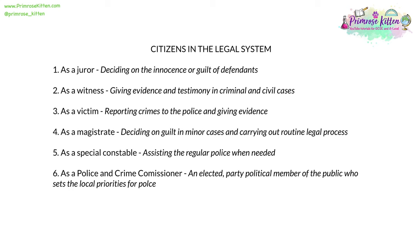There are many ways in which citizens can become involved in the legal system. As a juror, where they may decide on the innocence or guilt of defendants. As a witness, where they may give evidence or testimony in civil or criminal cases. As a victim, where they can report crimes to the police and give evidence. As a magistrate, where they may decide on guilt in minor cases, or carry out routine legal processes such as the awarding of bar licences. As a special constable, where they assist the regular police as backup where needed. Or as a police and crime commissioner — an elected party political member of the public, who when elected sets the priorities for local police.